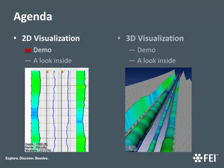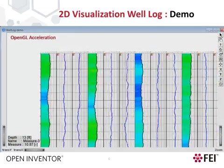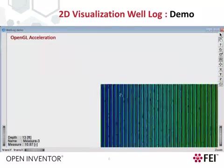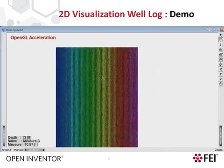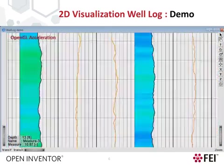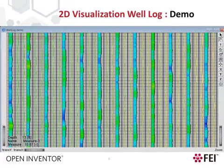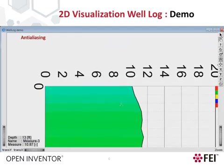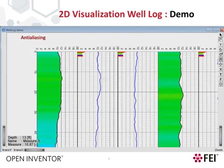Let's start with a demo of well log visualization in 2D. In this example, we can see how Open Inventor can visualize hundreds of well logs at the same time. OpenGL acceleration using the GPU allows extremely fast pan and zoom even with very large real-time data sets. Open Inventor also provides state-of-the-art anti-aliasing to get high-quality rendering for lines, logs, and text.